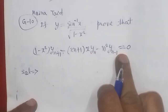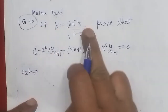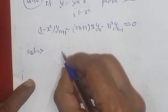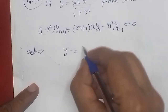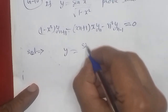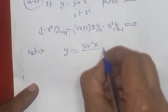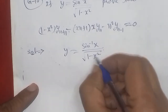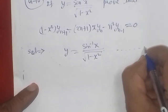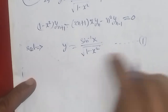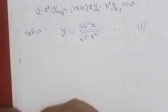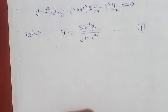We have to prove this. Let us keep Leibniz theorem in mind. The value given is written as: y is equal to sin inverse x upon square root of 1 minus x square — equation number 1. To get rid of the square root, we will square both sides, so y squared on the left hand side, and sin inverse x squared divided by 1 minus x square on the right.